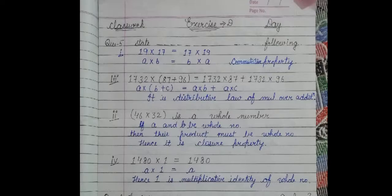First we have 19 into 17 and 17 into 19. This is your statement. So, consider 19 as A and consider 17 as B. So, A multiply B is equal to B multiply A. Now, 2 multiply 3 or 3 multiply 2? Answer will remain the same, that is 6. So, this is our commutative property.